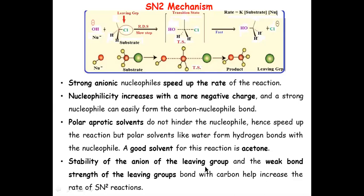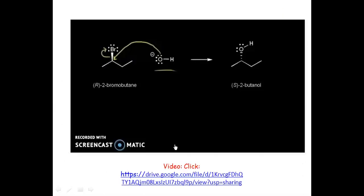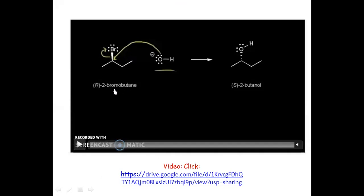The stability of the anion of the leaving group is also important. Once the leaving group departs, it is in anionic form, having departed with its lone pair of electrons. If this anionic form is stable, then the rate of the SN2 reaction will also be higher. Let's take an example of an unsymmetrical substrate, 2-bromobutane, which has a chiral center.